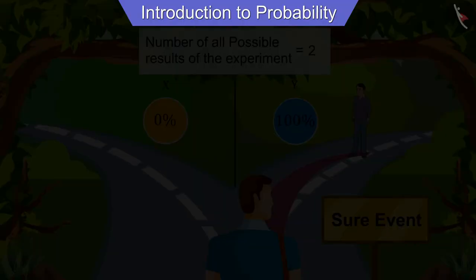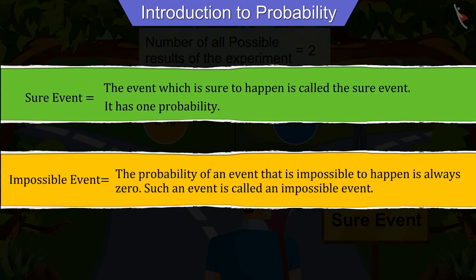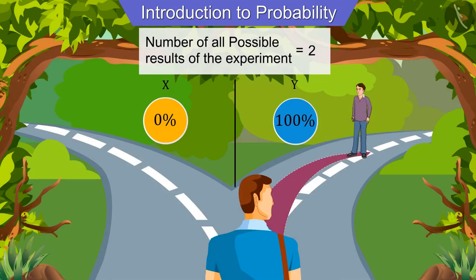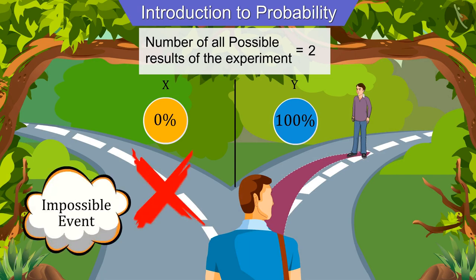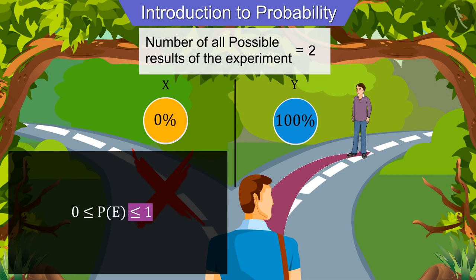The event which is sure to happen is called the sure event, and it has a probability of one. Conversely, the probability of an event that is impossible to happen is always zero — such an event is called an impossible event. For example, after finding the right path, Joseph will not go on road X, so that is an impossible event.